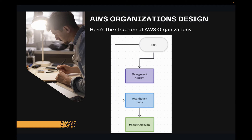Here's the basic structure. You have a root account — every AWS account has a root account. Then you have a management account, which can manage the entire AWS organization. Then you have organizational units, which are the foundation for organizations. Under the OUs you have member accounts. And then you have policies, which I'll explain shortly. Root is at the top, connected to the management account and to the organizational units. OUs will have member accounts. It can get complicated with nested OUs, each having multiple AWS accounts, but basically that is the structure.